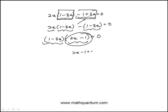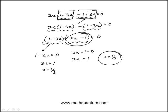Now 2x minus 1 would be 0 when 2x is equal to 1 or x is half. So that's one value. The other one would come from here: 1 minus 3x is 0, again 3x is 1, x equal to 1 third.